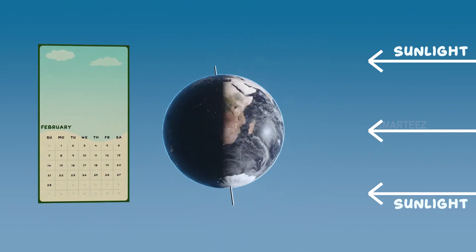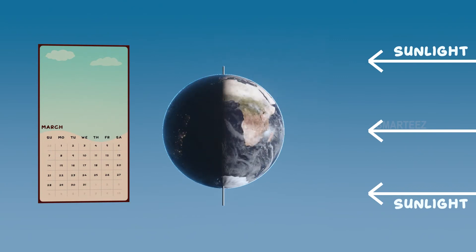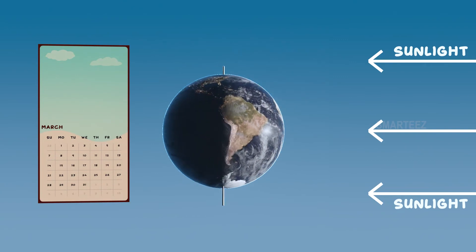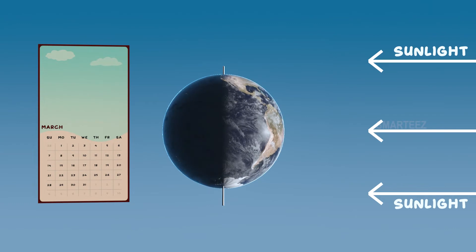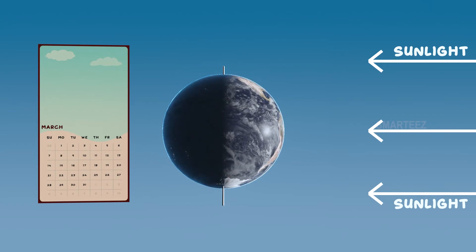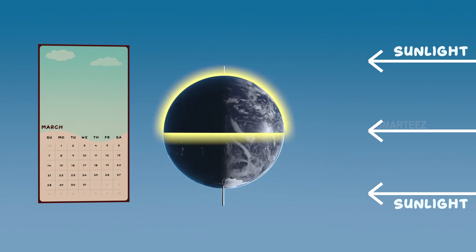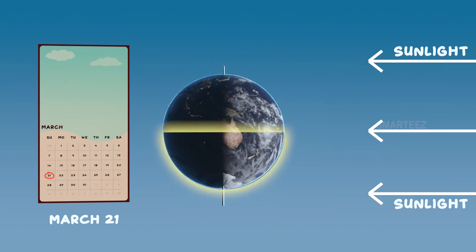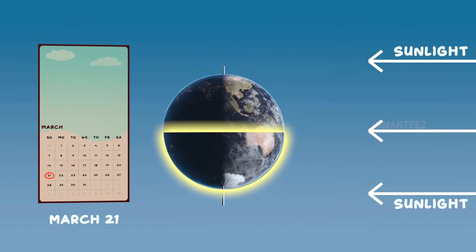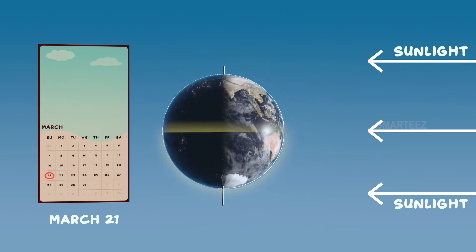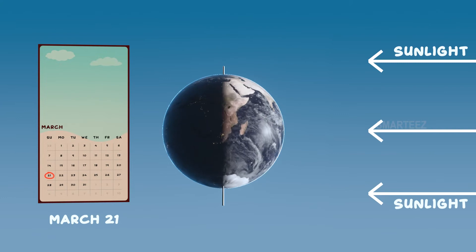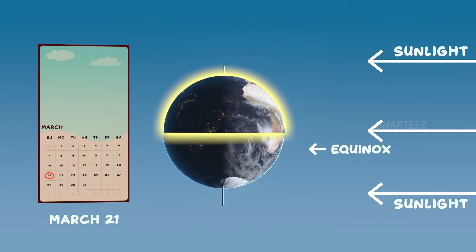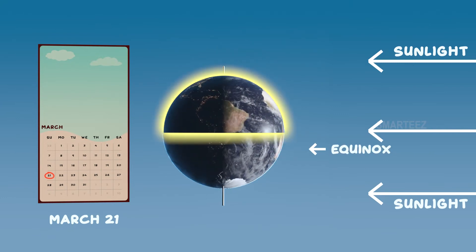Let's make the earth move around its orbit and see the different angles of sunlight on the two hemispheres. We now see how the sun's light falls equally on the two halves of the earth on March 21st. On this day, both hemispheres will receive equal amounts of light — that's called equinox.